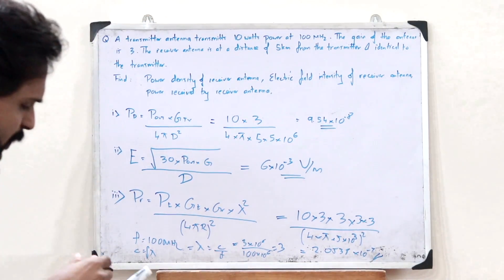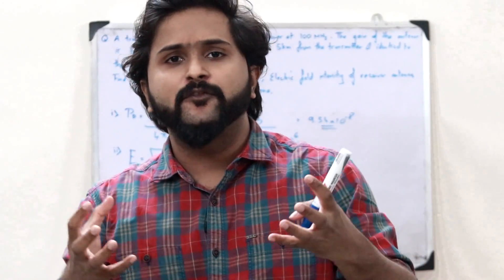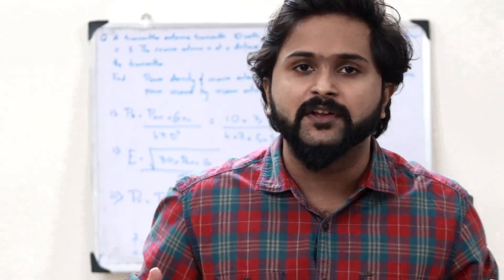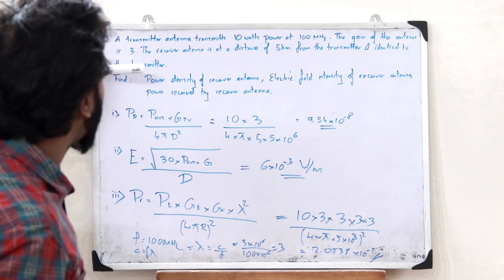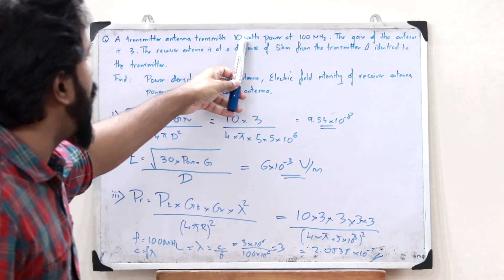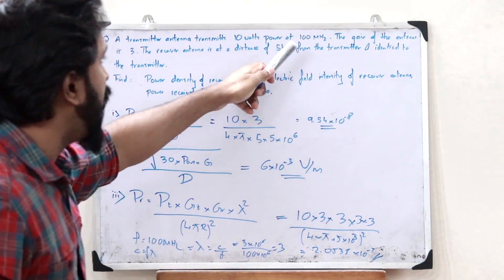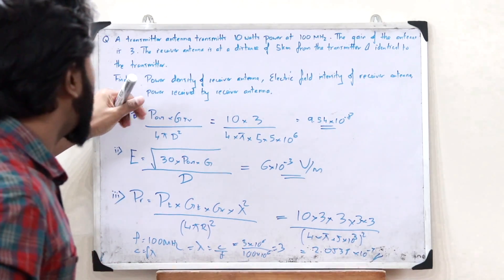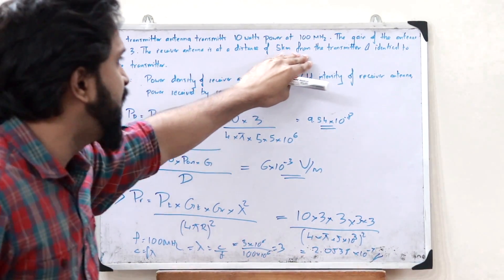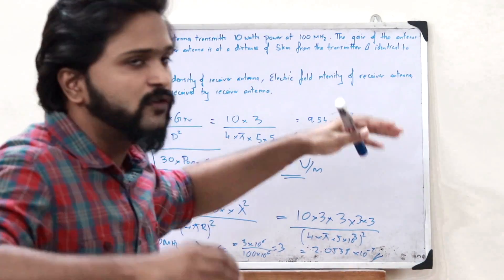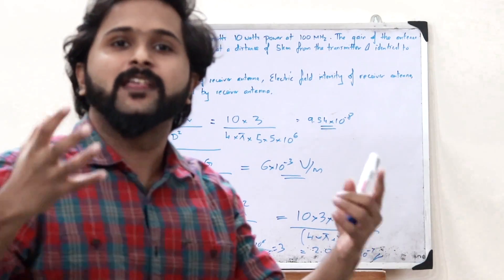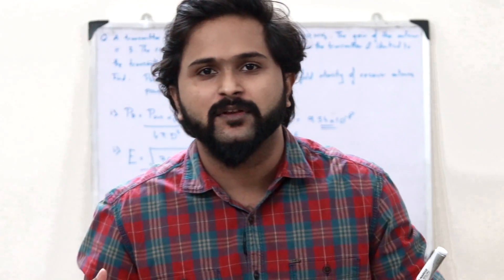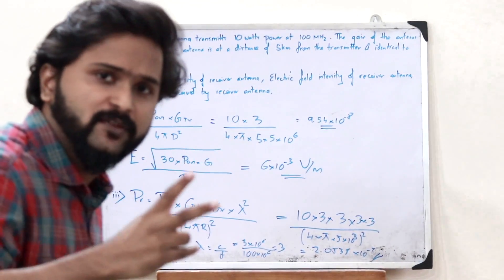These are the types of questions that can be asked in antenna and wave propagation examinations. If you know the formulas, it's direct substitution. When you get a question, first write down all the given parameters — for example, transmitted power = 10 W, frequency f = 100 MHz, gain G = 3, distance d = 5 km. Once the values are listed, it's easy to identify which formula to use and get the answer.